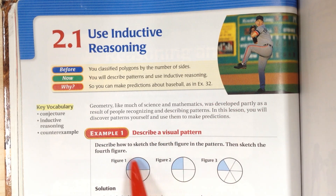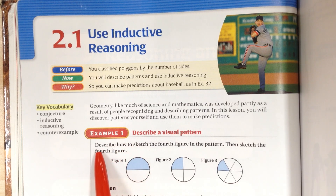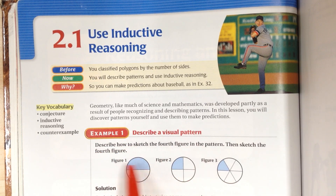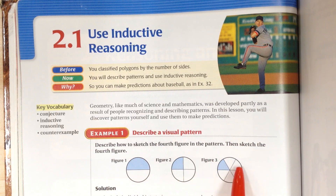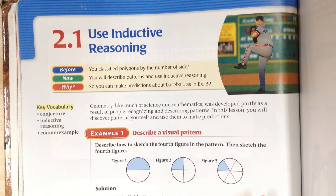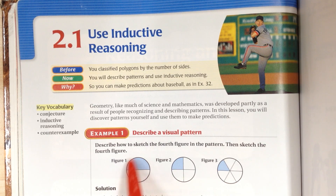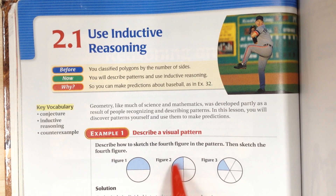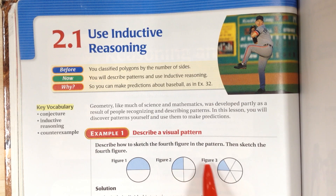For example, looking at this example, it says describe how to sketch the fourth figure. You have figure 1, 2, and 3, and by looking at the pattern you have to figure out what the next picture would be. In figure 1 you have one diameter. Figure 2, you have two diameters and they divide the regions equally. Figure 3, you have three diameters.